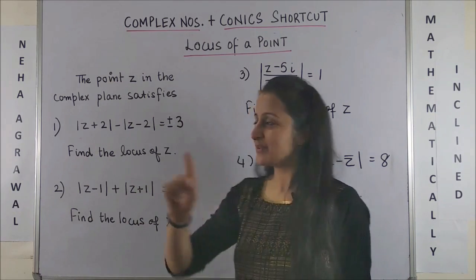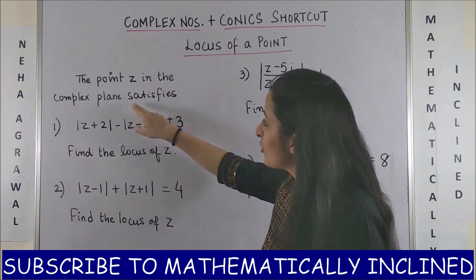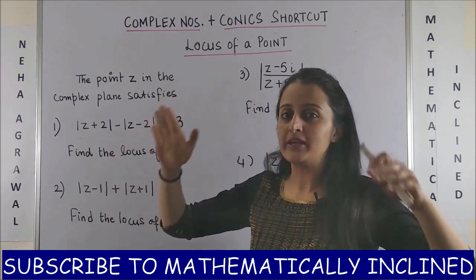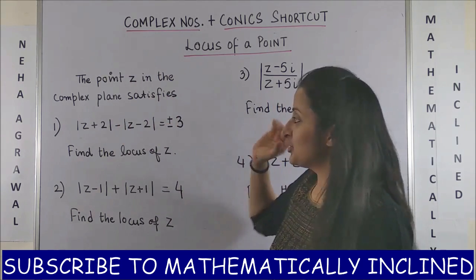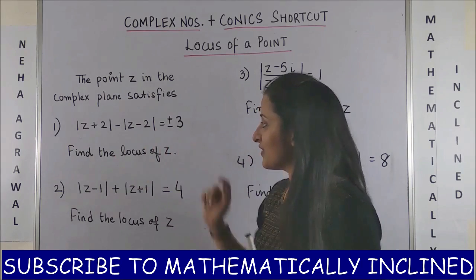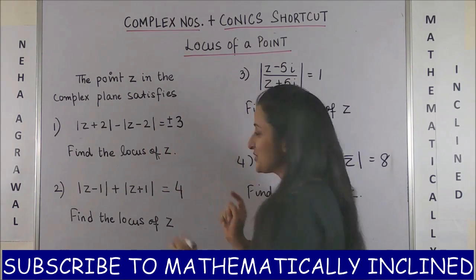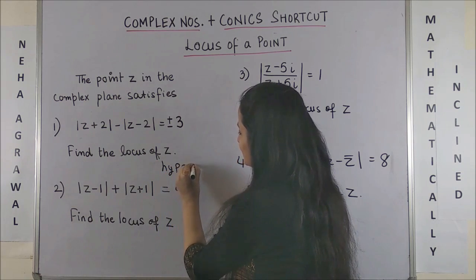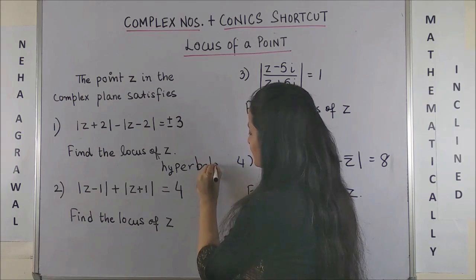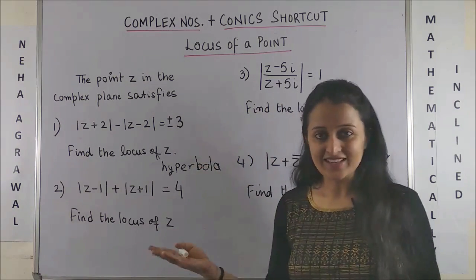Looking at the first question, it says the point Z in the complex plane or the Argand plane or the Gaussian plane satisfies this condition, this complex equation, then find the locus of Z. The answer should be it would make a hyperbola. That's it.